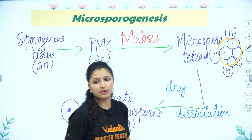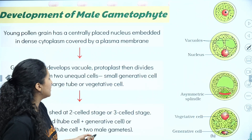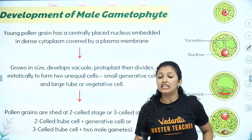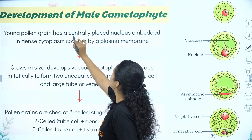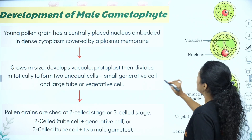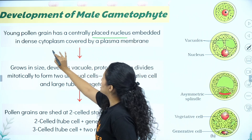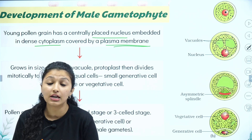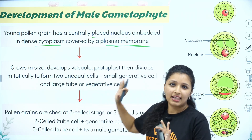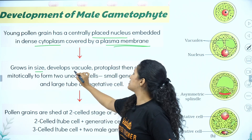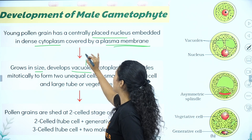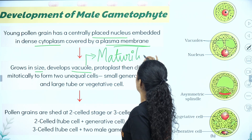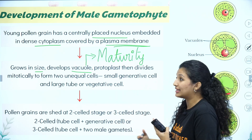In the microspore, the young pollen grain has a centrally placed nucleus in dense cytoplasm, covered by a plasma membrane. As it grows in size, it develops a vacuole — this indicates maturity.